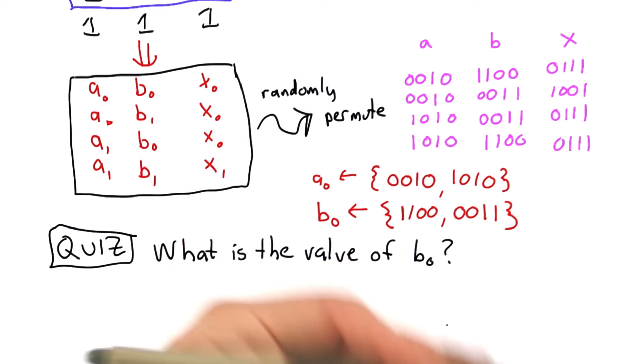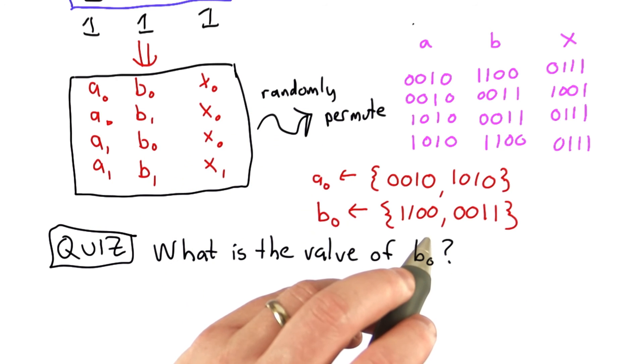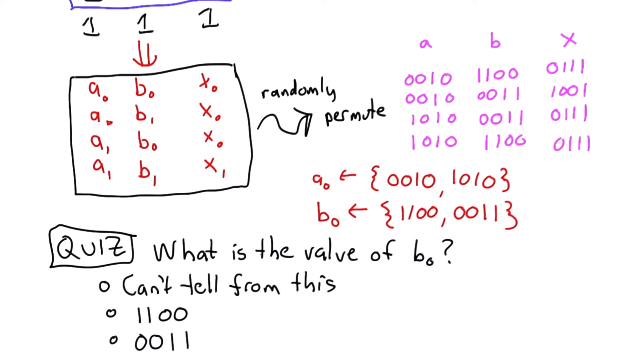And that would mean you're evaluating the circuit and you're learning the values in the circuit, so you don't have the secure computation you wanted. Can you determine the value of B0 knowing this garbled table?